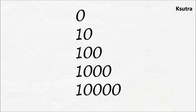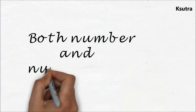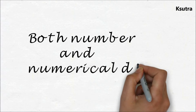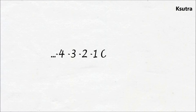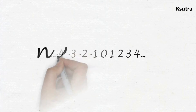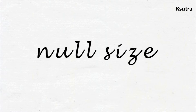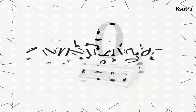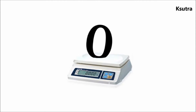Zero is both a number and a numerical digit used to represent that number in numerals. Zero is the integer that precedes the positive one and follows minus one. Zero is an integer which quantifies a count or an amount of null size. If something has a weight of zero, it has no weight.